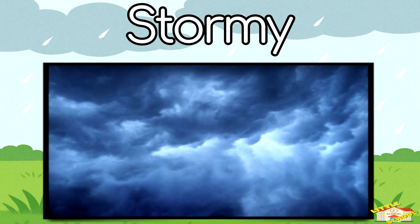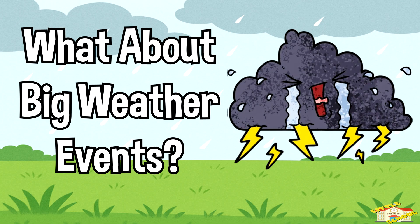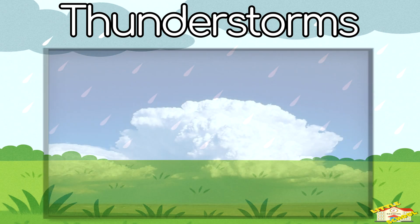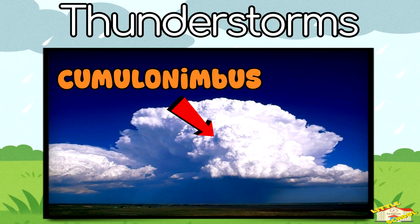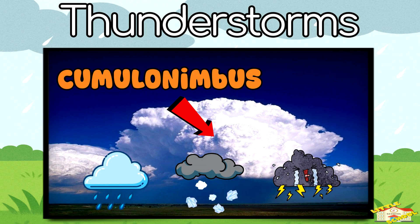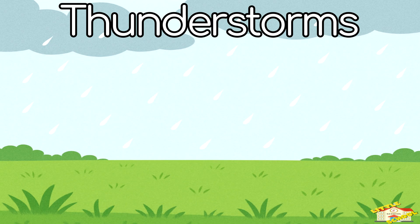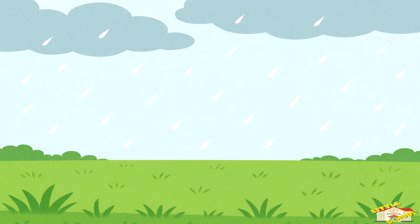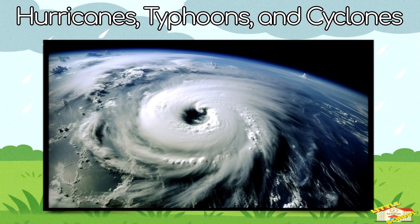What about big weather events? Thunderstorms — storm clouds, also called cumulonimbus, can make rain, hail, thunder, and lightning. Some strong storms are supercells, which swirl like mini tornadoes and bring powerful wind, hail, or tornadoes. Hurricanes, typhoons, and cyclones are also major weather events.